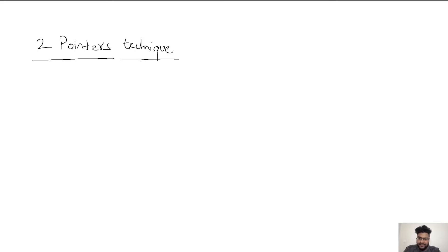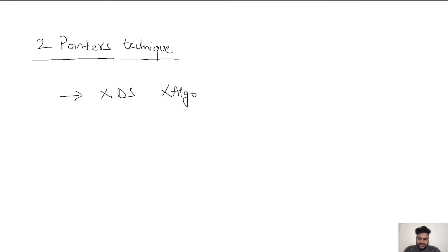In this video we are going to start with the two pointers technique. The common misconception is that two pointers is a data structure or an algorithm — it's neither. It's more like an optimization technique, just like binary search, and we use this technique a lot in order to solve complicated problems.